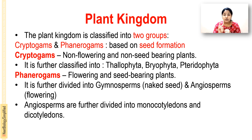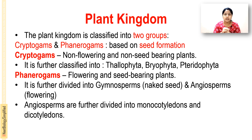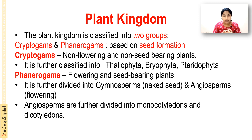The plant kingdom is classified into two groups: cryptogams and phanerogams, based on seed formation. Cryptogams are the non-flowering and non-seed bearing plants — they have no flowers and as a result no seeds. They are further classified into thallophytes, bryophytes, and pteridophytes.